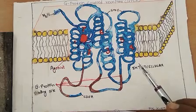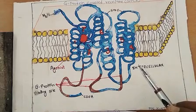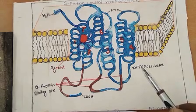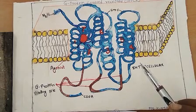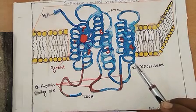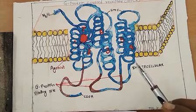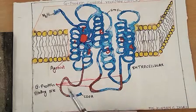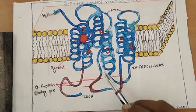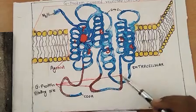G proteins are classified by their subunits. Some important G proteins are GS, GI, G0, GQ, and G13. This is the G protein binding site present intracellularly. These domains are present here.